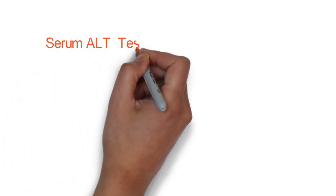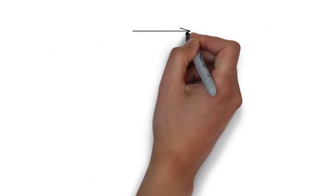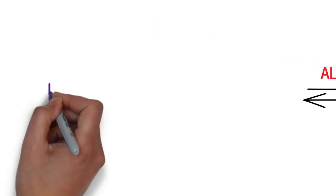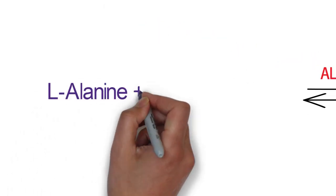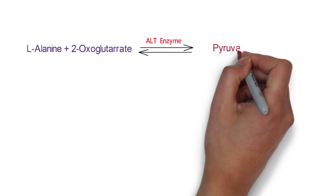In this video, we are going to see the principle of serum ALT test. The ALT enzyme catalyzes the reversible transamination of L-alanine and 2-oxoglutarate to form pyruvate and L-glutamate.